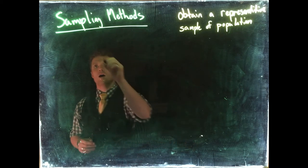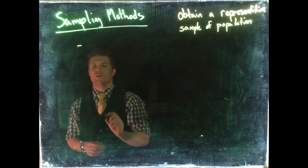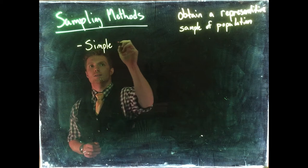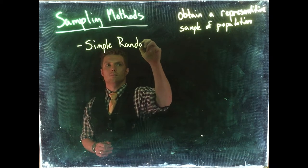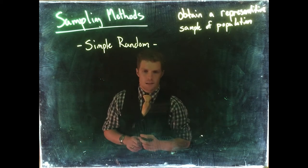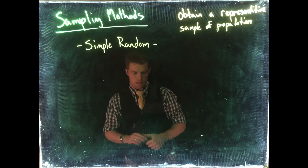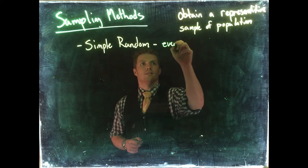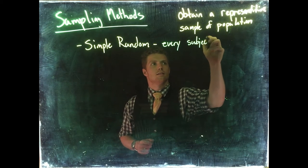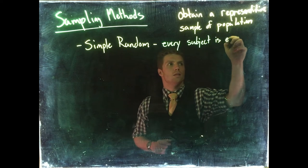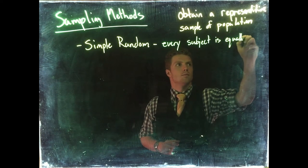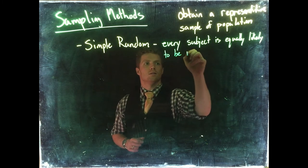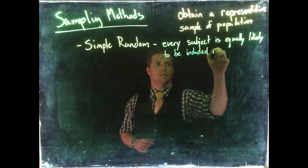The most common good one that we find is called simple random sampling. Simple random sampling is nice and easy. It just means that every subject is equally likely to be included in the sample.